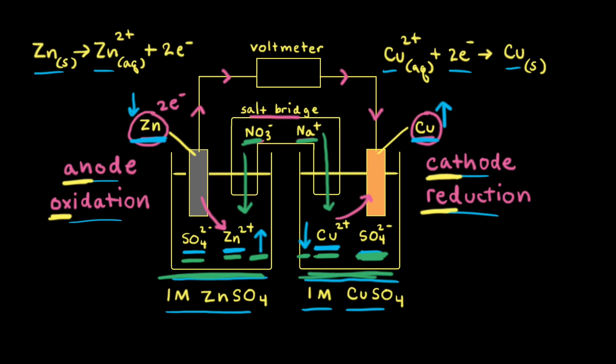The salt bridge is necessary for the galvanic cell to work — if it were removed, electrons would stop moving in the wire. The last component is the voltmeter. For this galvanic cell with one molar zinc sulfate and one molar copper sulfate at 25 degrees Celsius, the initial voltage is 1.10 volts. The voltmeter measures the difference in electric potential between two points, and as long as there's a difference in electric potential, electrons will flow in the wire.